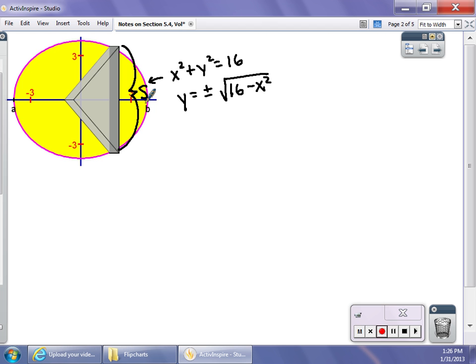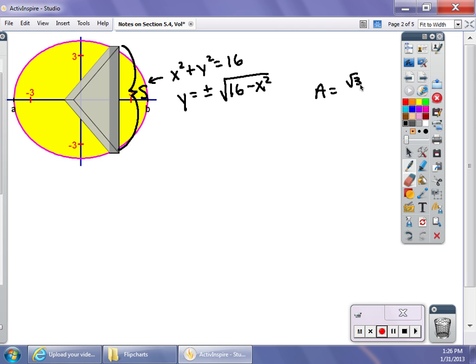So, first of all, the area of an equilateral triangle, if you know the side, is s squared times the square root of 3 over 4. That's the area of the equilateral triangle known on the side. The square root of 3 over 4 can come out front of your integral. That's a constant, so square root of 3 over 4 times the integral from negative 4 to 4.